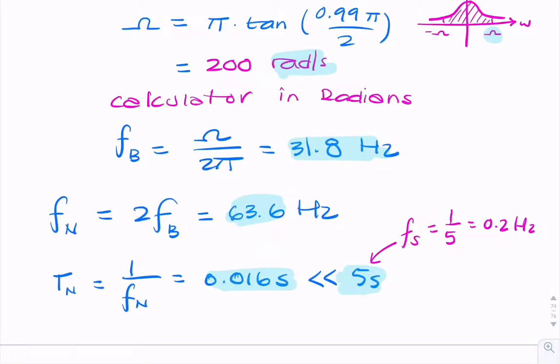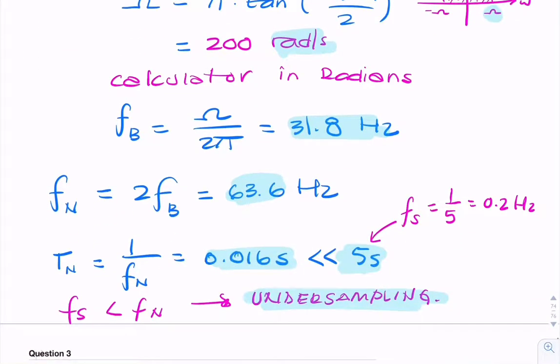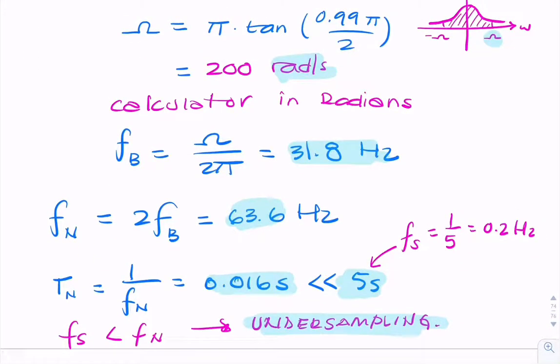So what do we call it when our sample rate is much smaller than the Nyquist rate? So the sample rate is smaller than the Nyquist rate. We call that undersampling. So we will definitely suffer aliasing effects, and we will be unable to recover the original temperature variation after sampling. So this is called undersampling. The question asked to comment on the sampling rate used, we can say this is undersampling because it is less than the Nyquist rate of 63.6 hertz.